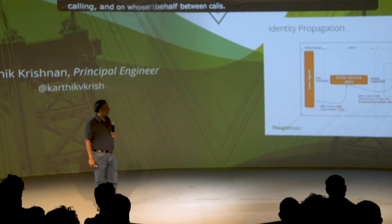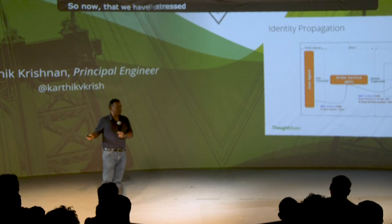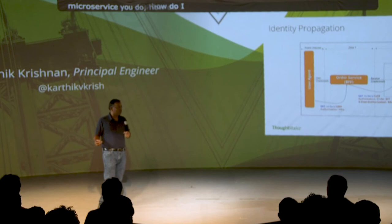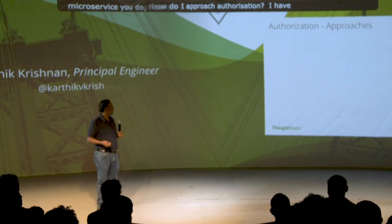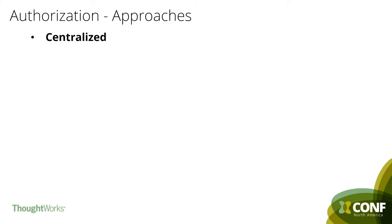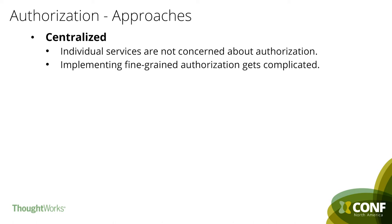Now that we've stressed that authorization is a key thing for every microservice you build, how do you approach authorization when you have tons of microservices? There is no silver bullet. One straightforward approach is centralized — having some kind of gateway that filters all calls into the services and performs authorization at a coarse level. An API Gateway is a classic example, and many cloud providers give you these facilities. The benefit is individual services no longer need to implement authorization, but keep in mind this can only be done at a very coarse grain. When it comes to rich domain logic and verification, it gets really complicated.